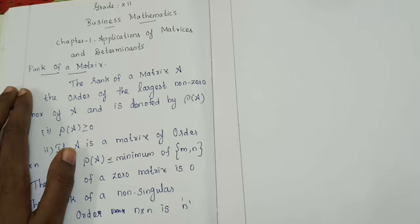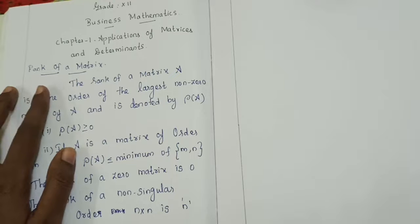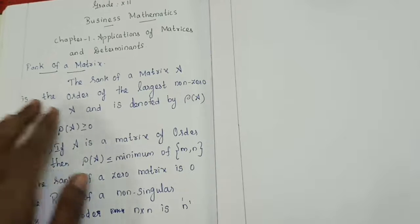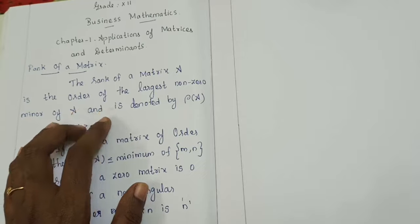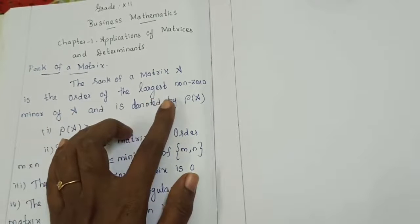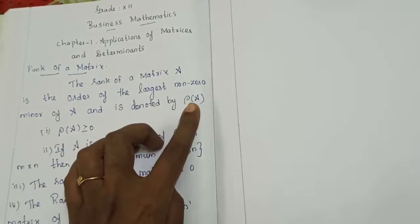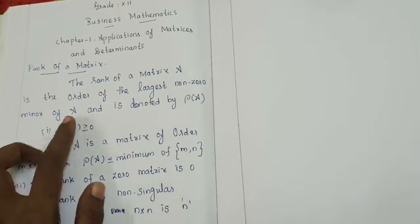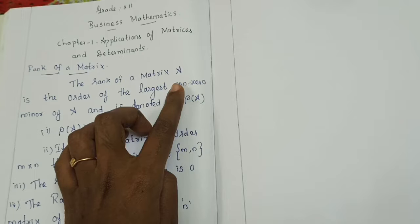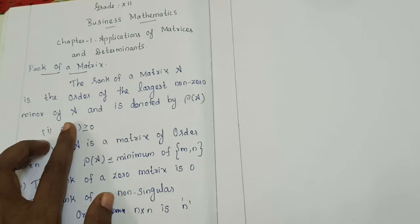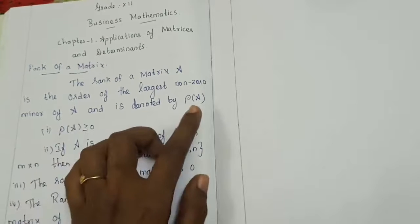The first section is rank of a matrix. The word 'rank' is new for you. The definition: the rank of a matrix A is the order of the largest non-zero minor of A, and is denoted by rho of A.